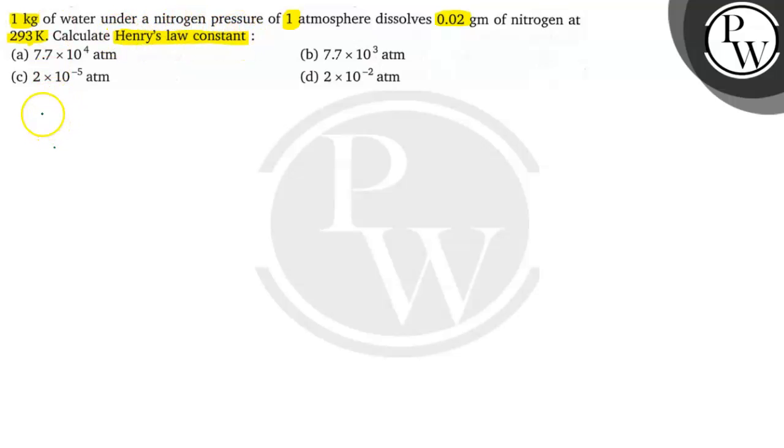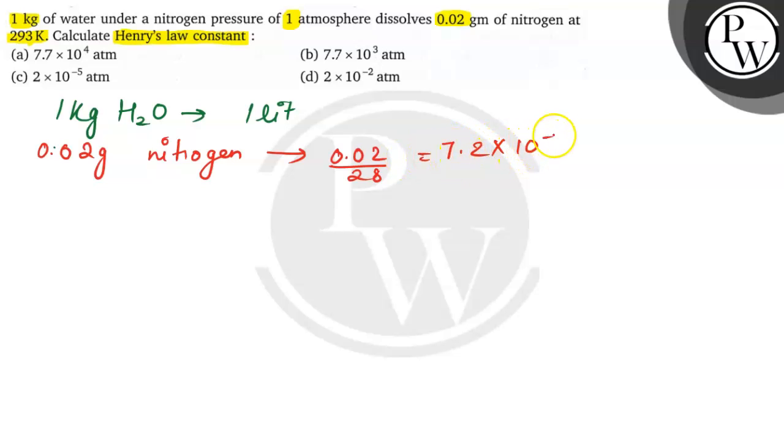We know that 1 kg of water (H2O) corresponds to 1 liter. Here we can say that 0.02 grams of nitrogen will correspond to 0.02 divided by 28, which equals 7.2 × 10^-4 moles.